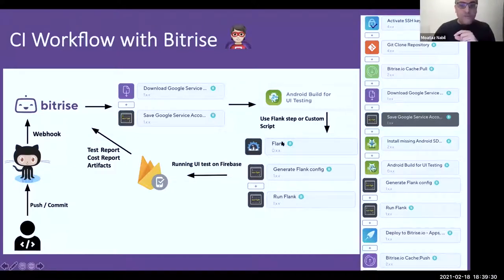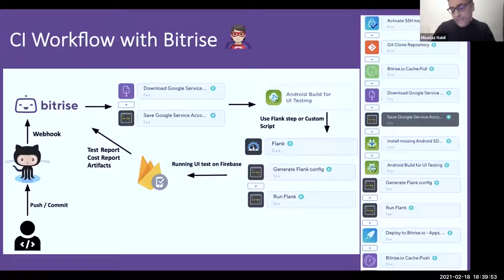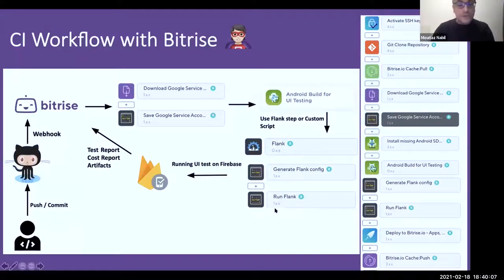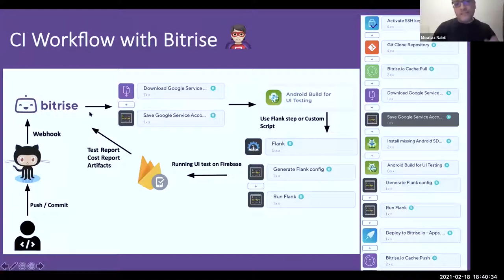You can use Bitrise's predefined Flank step — passing the flank.yaml file and selecting the Flank version — or use a custom Script step. The Script step generates the YAML file on-the-fly and downloads the Flank JAR from the GitHub releases page, then runs it. After Firebase finishes, test reports are fetched as artifacts back to Bitrise.